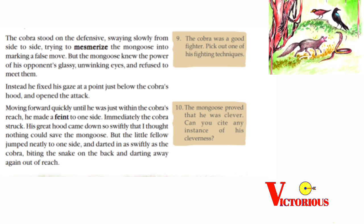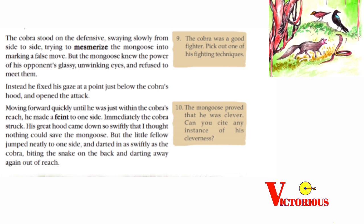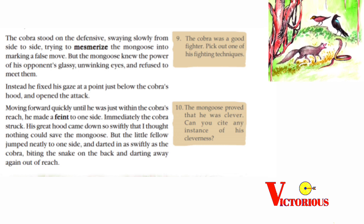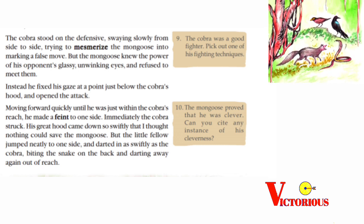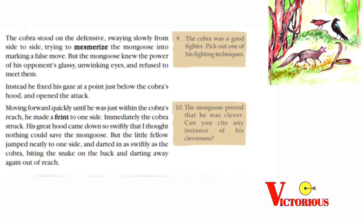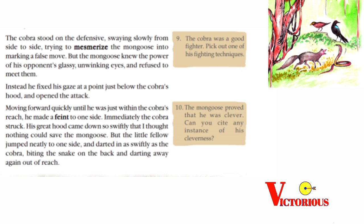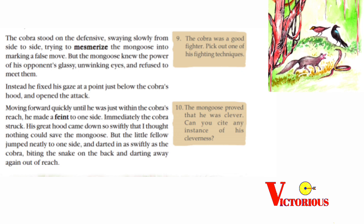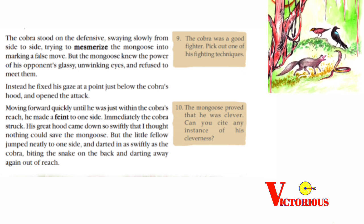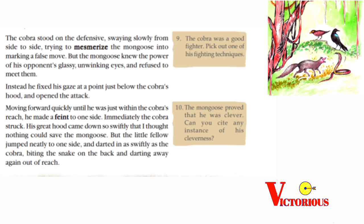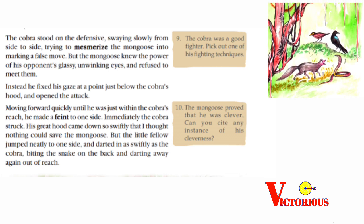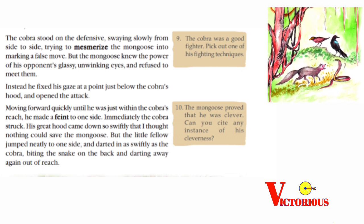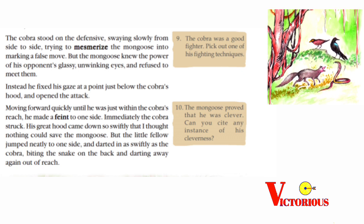Moving forward quickly until he was just within the cobra's reach, the mongoose made a feint to one side. Immediately the cobra struck — his great hood came down so swiftly that I thought nothing could save the mongoose. But the little fellow jumped neatly to one side and darted in as swiftly as the cobra, biting the snake on the back and darting away again out of reach.